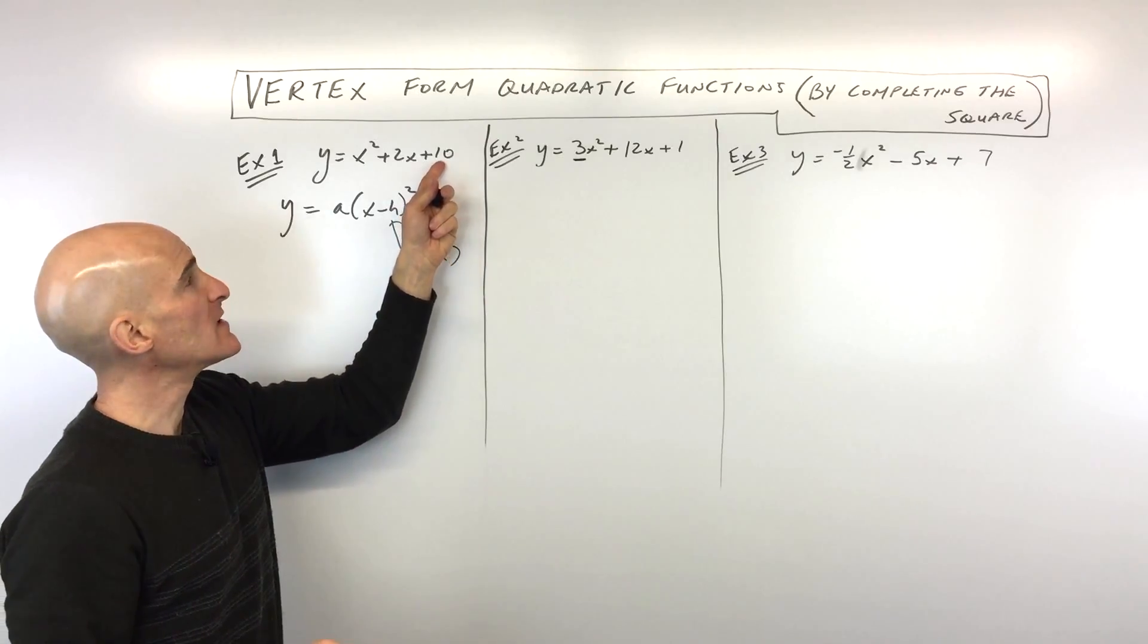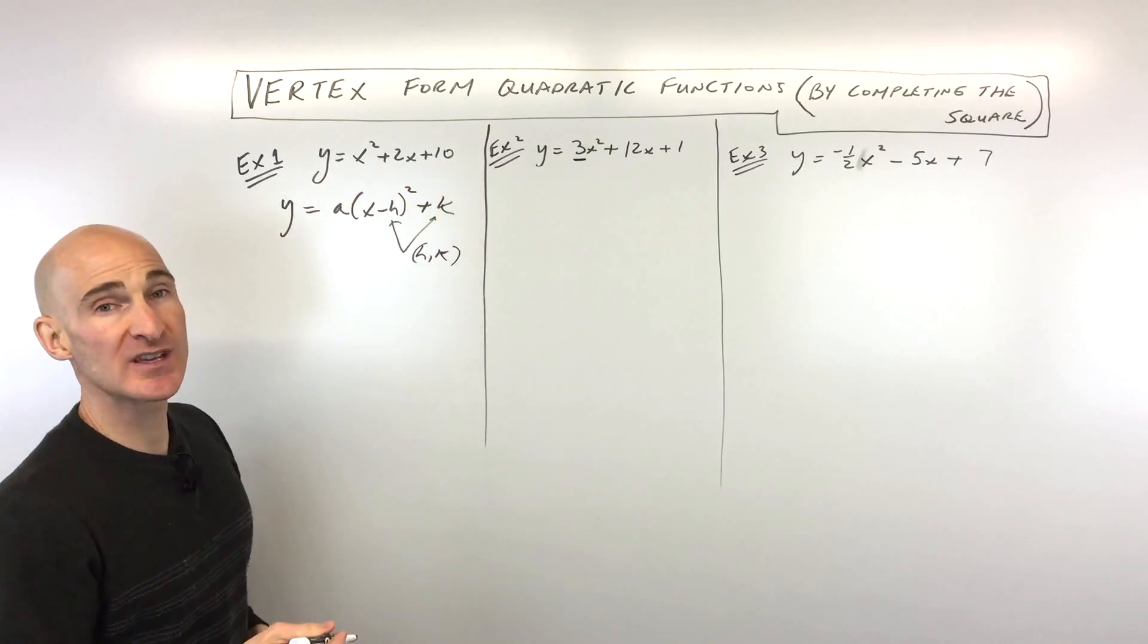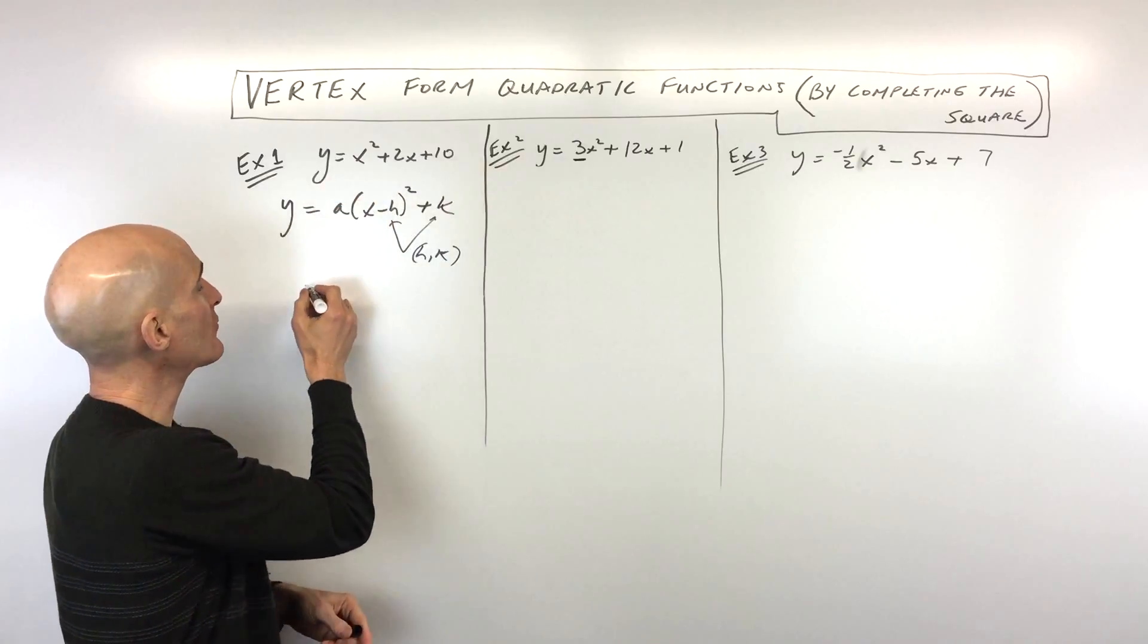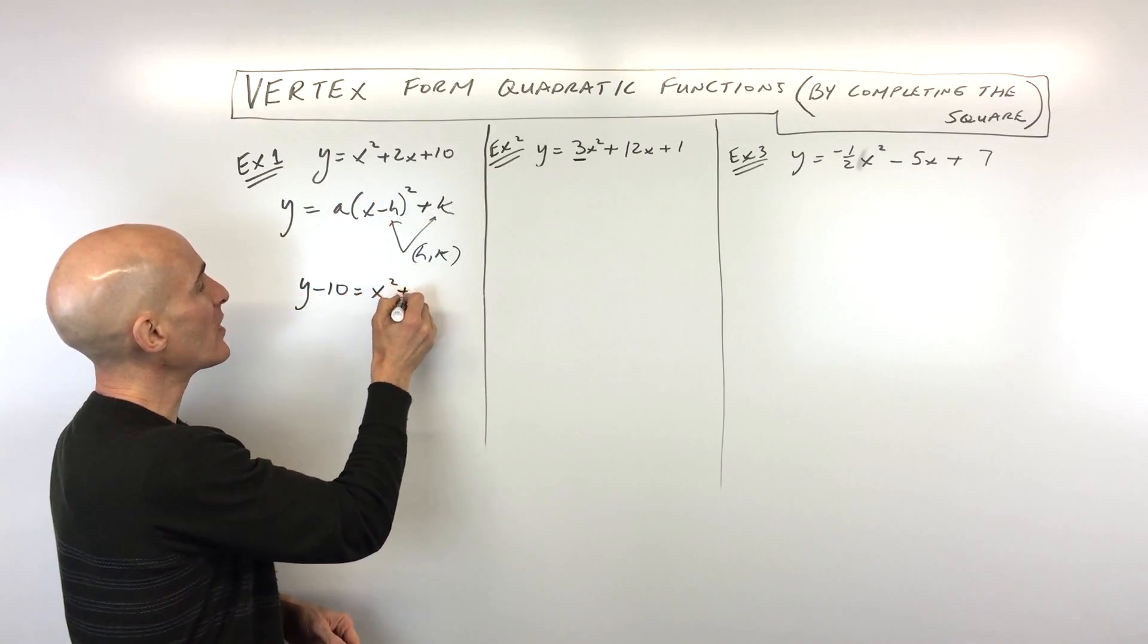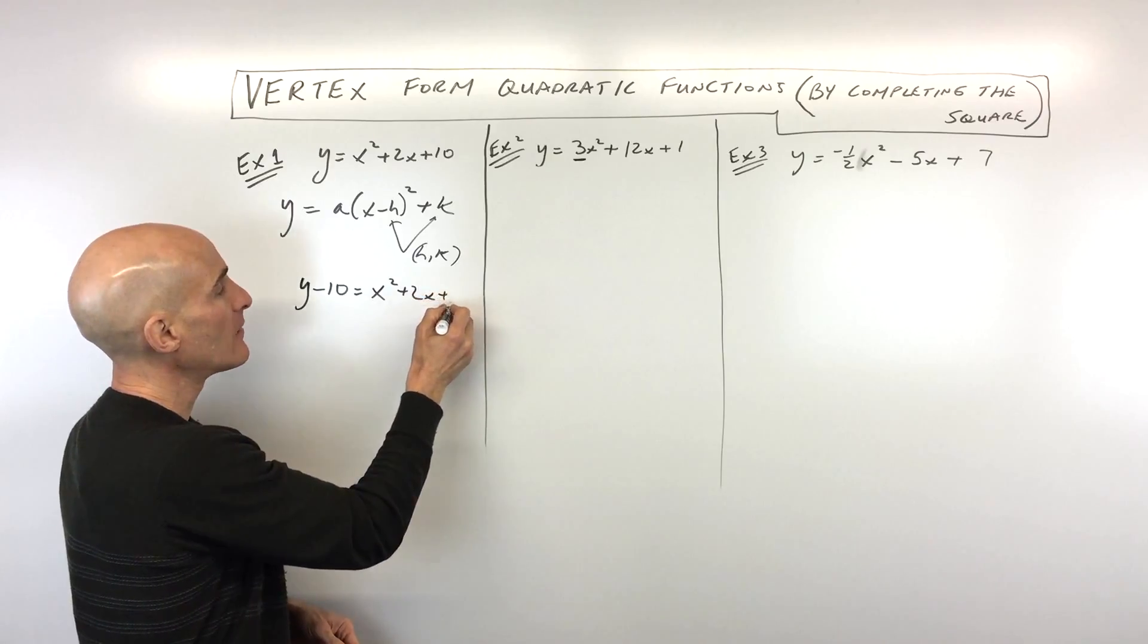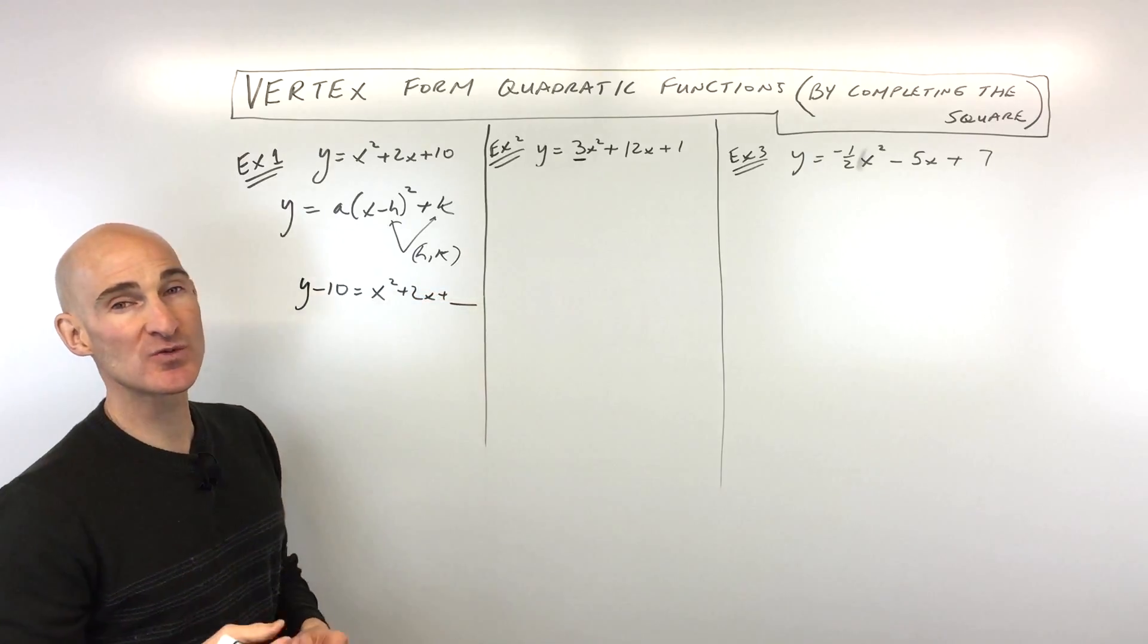There's a couple different ways. The first way to do it is basically just to move this constant to the other side of the equation by subtracting 10 from both sides. So we have y minus 10 equals x squared plus 2x plus blank. So here's where we're going to complete the square.